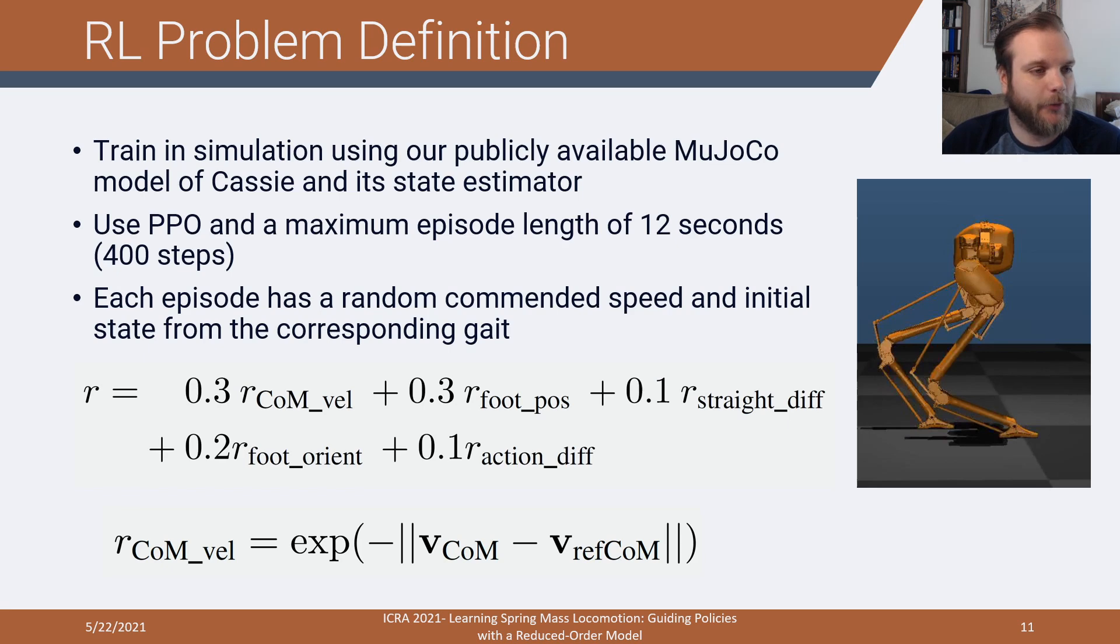Looking at the actual learning problem, we train this in simulation using our Mujoco model of Cassie and the state estimator. We use the PPO algorithm, a maximum episode length of 400 steps of that 33 hertz learned control loop, which ends up giving you about 12 seconds of walking. The way we do it is each time we do an episode, we select a random speed, an initial state from the gait from that speed. By seeding from around the motion, especially early on, the training sees all the different parts of the gaits it's trying to accomplish.